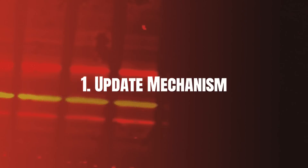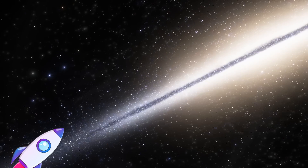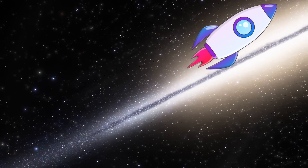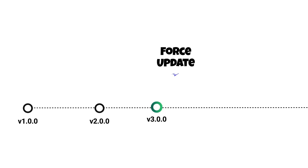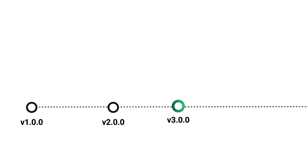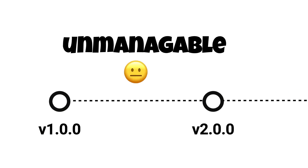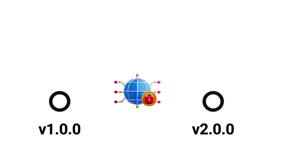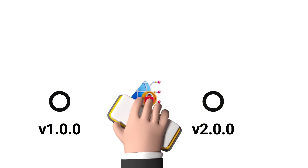It is very important to implement the update mechanism from the beginning of the release, because once you release a couple of versions and then implement soft update or force update, all the previous users will not be updated. You cannot control them unless you stop the API or use some workaround.